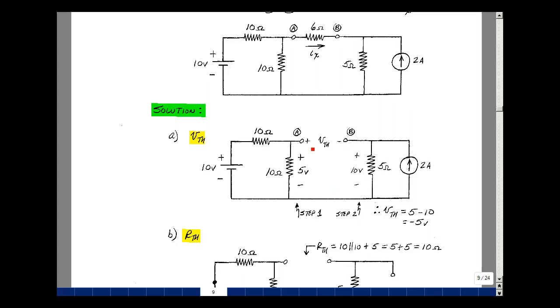The Thevenin voltage would be this node voltage, if we think of this as a common connection or ground, minus this node voltage, 5 minus 10 or minus 5 volts.